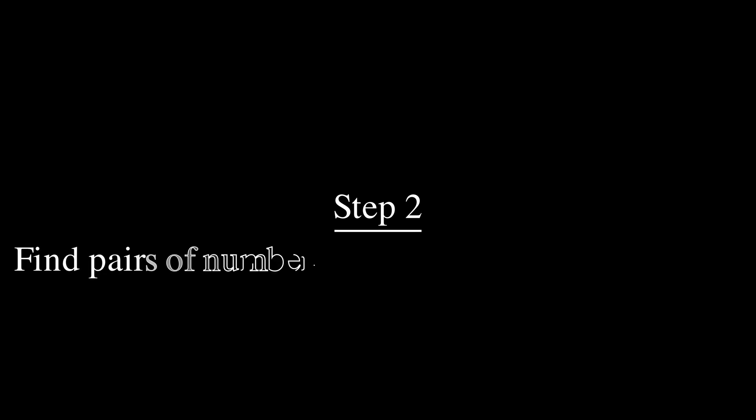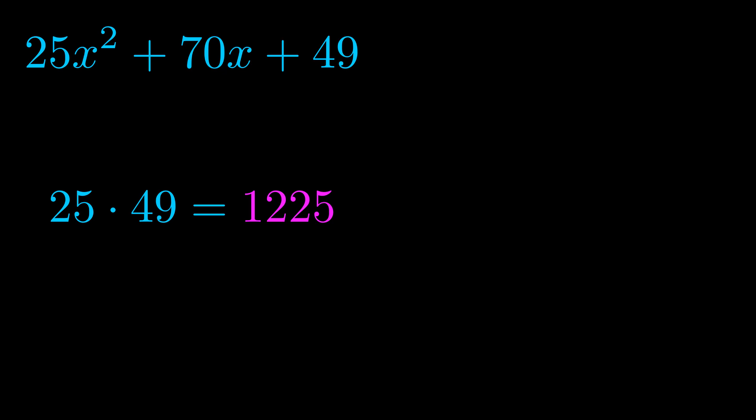Step two is to try to find all of the pairs which multiply to this number. Now it turns out you don't really need to find all of them, but go ahead and write down as many numbers as you can that multiply to the magenta value for now.